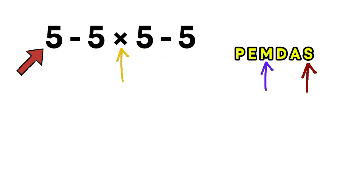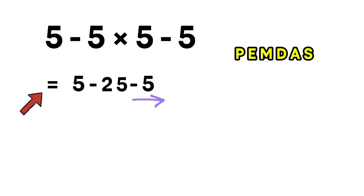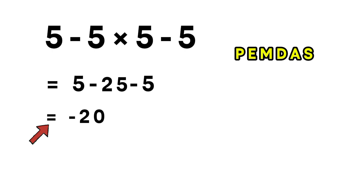So we begin with the multiplication. 5 multiplied by 5 equals 25. Now the expression becomes 5 minus 25 minus 5. We handle the subtractions from left to right. First, 5 minus 25 equals negative 20. Then, negative 20 minus 5 equals negative 25.